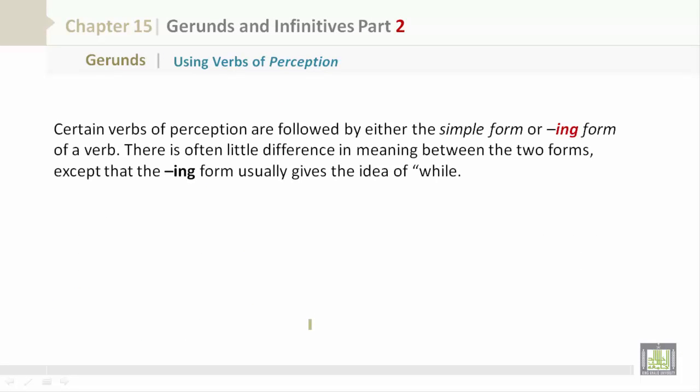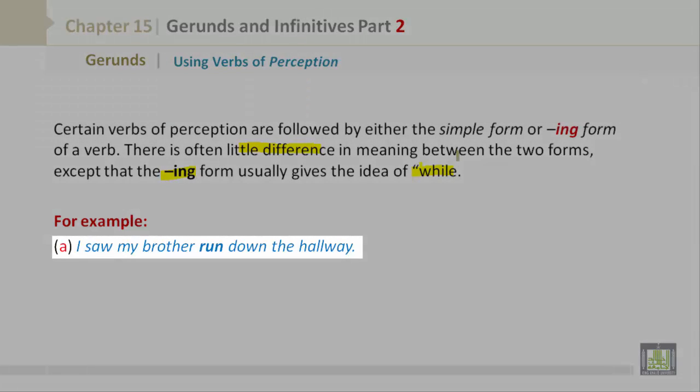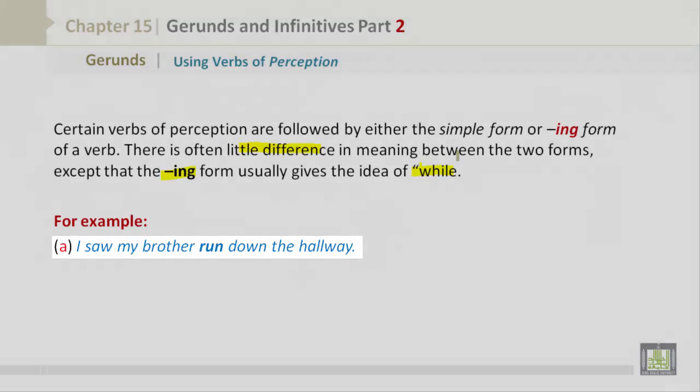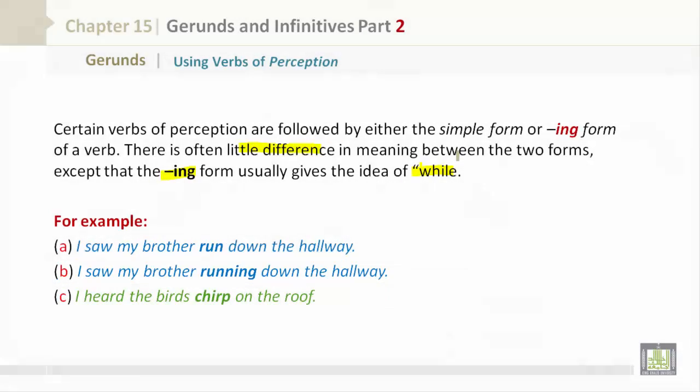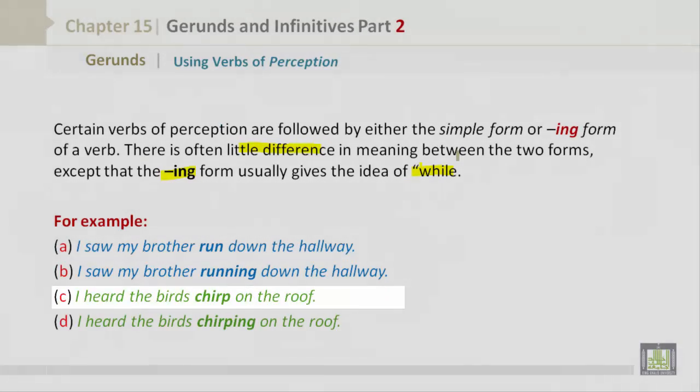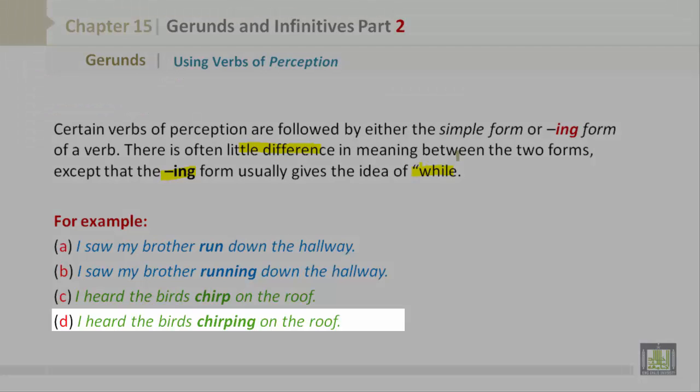Continuing on with using verbs of perception. Certain verbs of perception are followed by either the simple form or -ing form of a verb. There is often little difference in the meaning between the two forms, except that the -ing form usually gives the idea of while. For example, I saw my brother run down the hallway. I saw my brother running down the hallway. I heard the birds chirp on the roof. I heard the birds chirping on the roof.